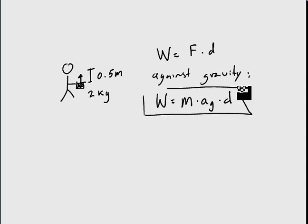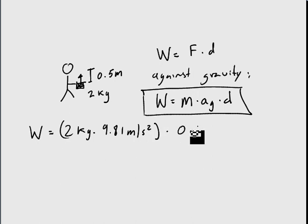So in this particular example, we would have 2 kilograms times 9.81 meters per second squared, and this is our force times 0.5 meters, and we'll get 9.81 joules.